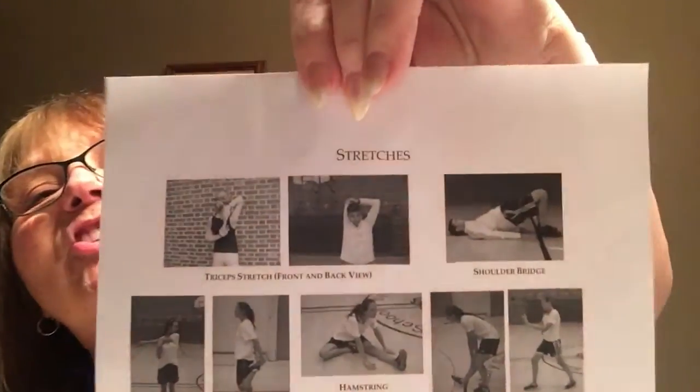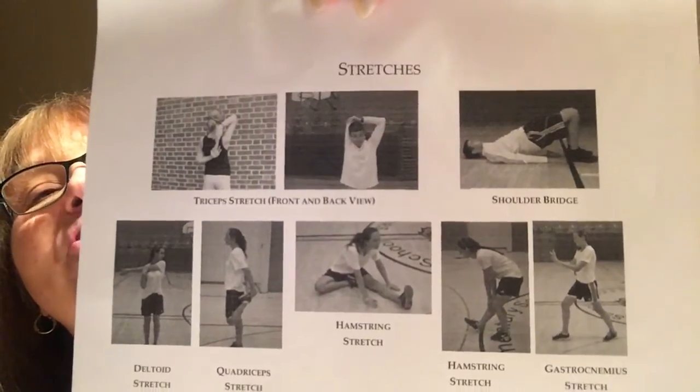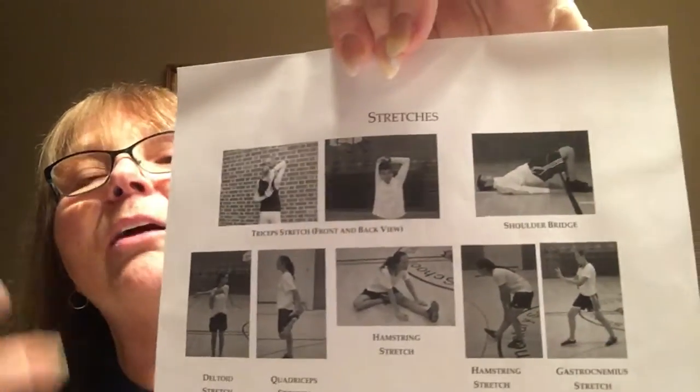Muscular strength examples include push-ups and chair dips — remember the tricep dips. Muscular endurance includes sit-ups or curl-ups and crunches. For flexibility, some examples you can use are the stretches on this sheet — the deltoid stretch, the hamstring stretch. All of these items will improve flexibility. Just like when we do the fitness gram testing, we test the sit and reach to see how your flexibility is and whether it improves.